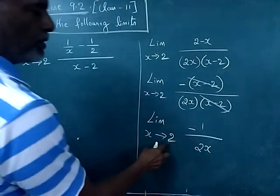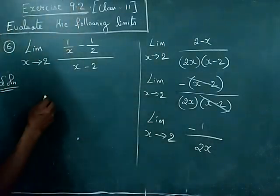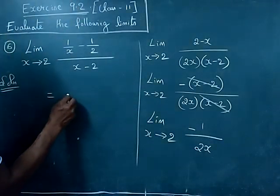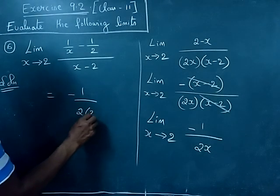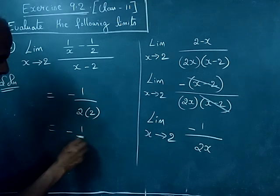So if you apply limits, x tends to 2 in this, you will get the answer as minus 1 divided by 2 into 2. So that will give you 4. So minus 1 by 4.